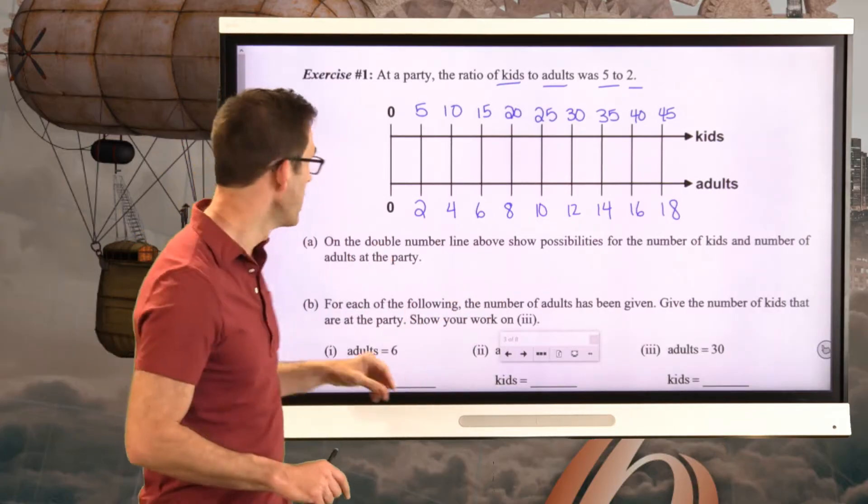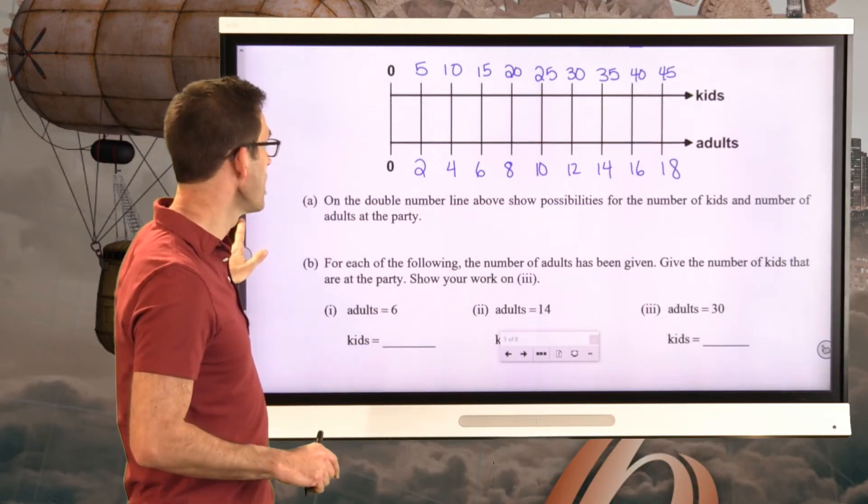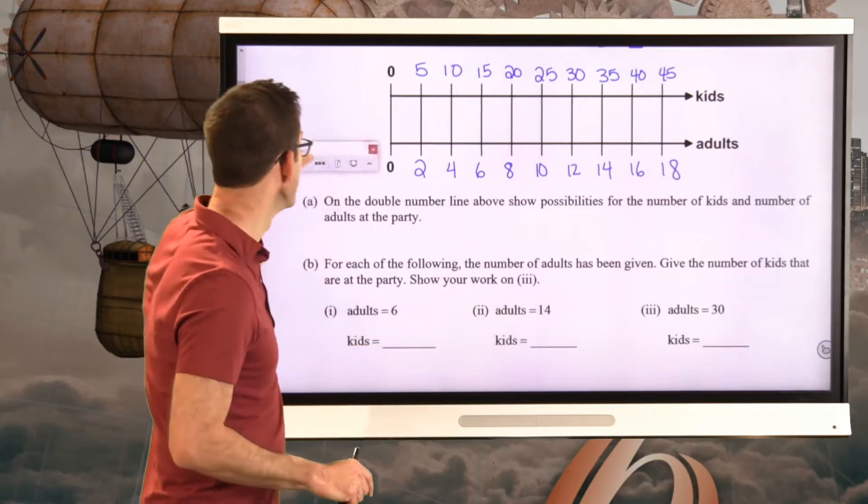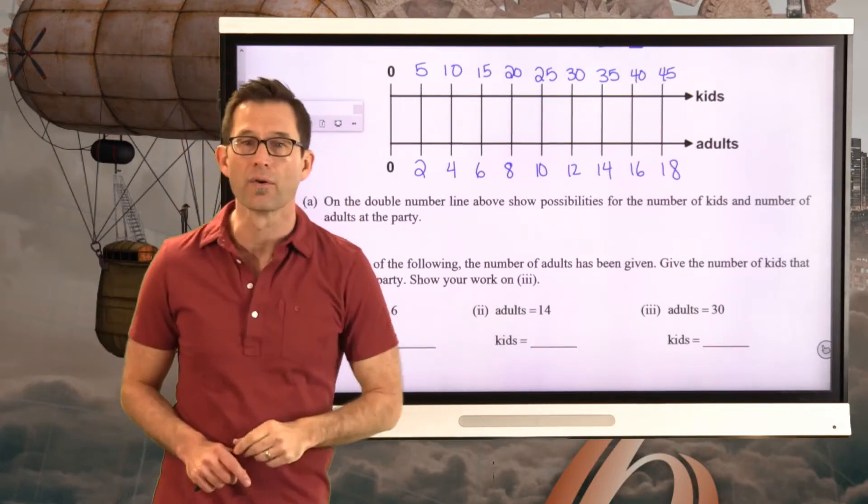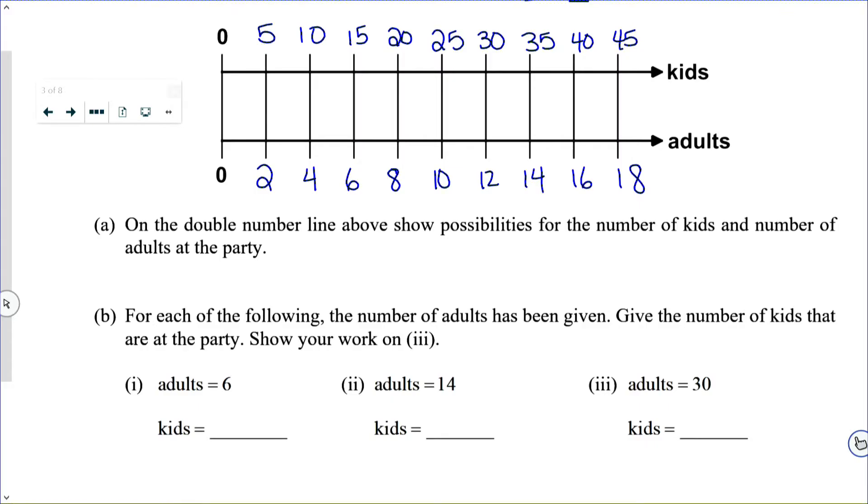And now that we've got this double number line, we can use it to answer a lot of different questions. Let's take a look at letter B. For each of the following, the number of adults has been given. Give the number of kids that are at the party. Show your work on number 3.